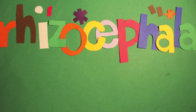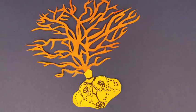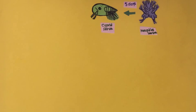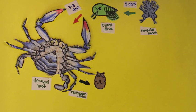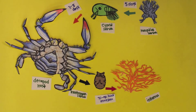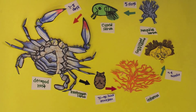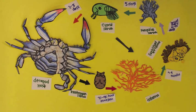Thus goes the life cycle of the rhizocephala, throughout which these parasites employ wily tactics to ensure the continuation of their own kind.